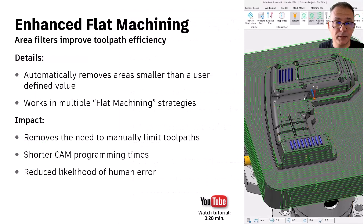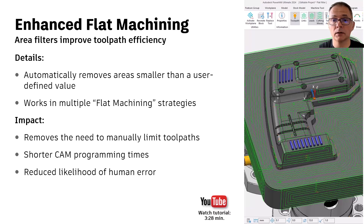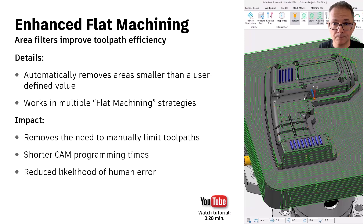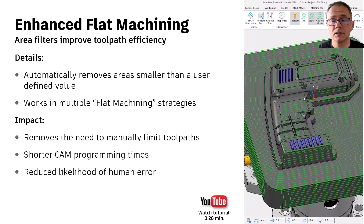Our next enhancement relates to flat machining and sees the inclusion of a new option to automatically exclude flat areas that are smaller than a user-defined value. The example on screen shows a flat finishing toolpath being used on a mold core block, where the area filter has been used to avoid machining the very tops of small blue ribs. This enhancement impacts multiple toolpath types including flat finishing, inclined flat finishing and more, reducing CAM programming time as it's no longer necessary to manually remove these small, inefficient toolpath segments.